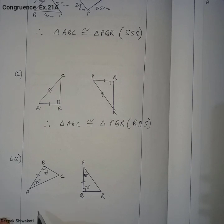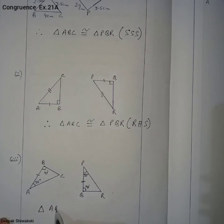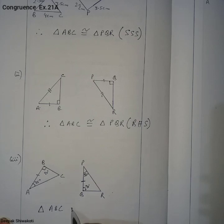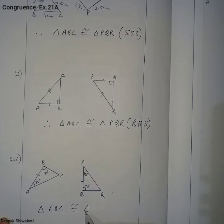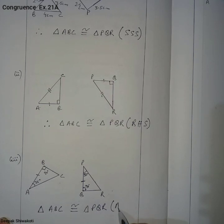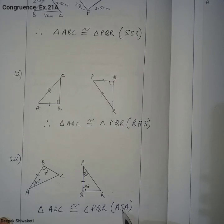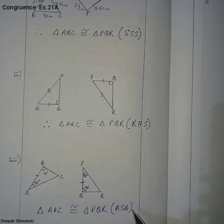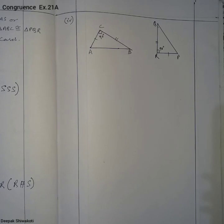These two triangles are congruent according to the ASA rule. Therefore, triangle ABC is congruent to triangle PQR by ASA (Angle Side Angle).